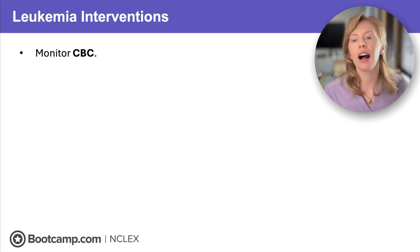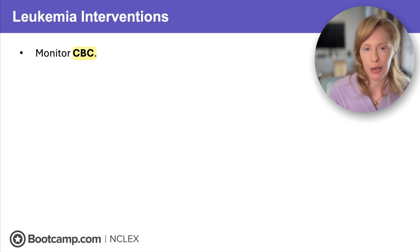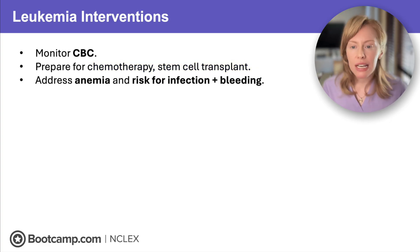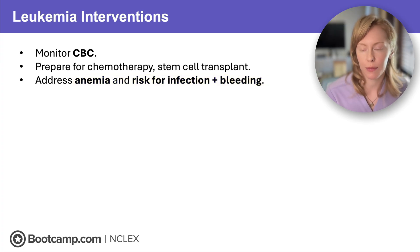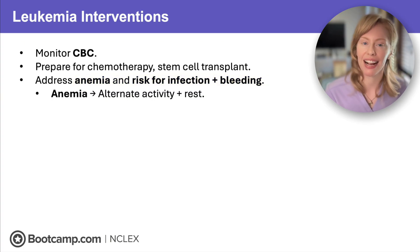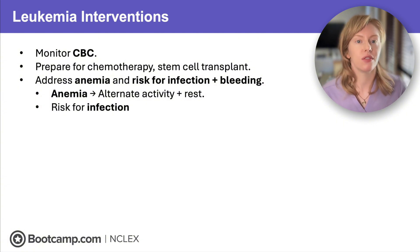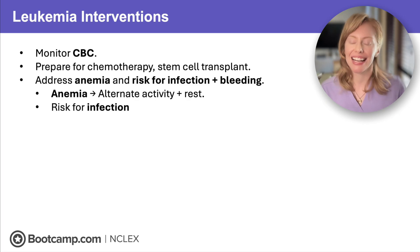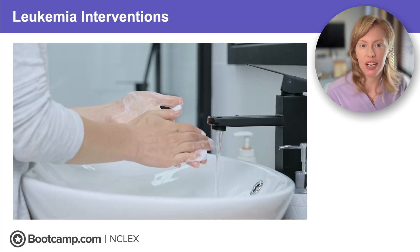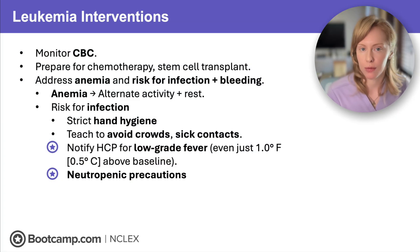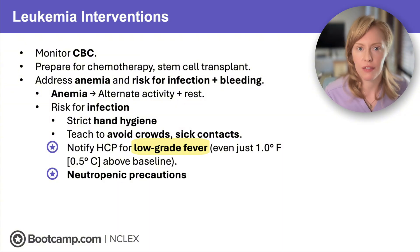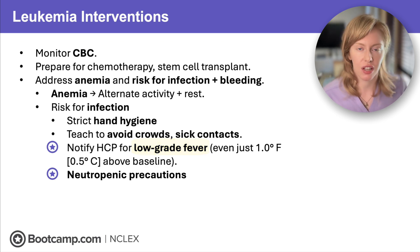Once diagnosed, monitor their CBC to trend the severity of pancytopenia and assess risk for infection, bleeding, and anemia while preparing them for chemotherapy and/or a stem cell transplant. Address anemia by teaching them to alternate activity and rest. It's very important to limit infection risk because it's a major killer in clients with leukemia — the most important intervention is strict hand hygiene. Teach them to limit exposure by avoiding crowds and sick contacts. Notify the healthcare provider for even a low-grade fever — just one degree Fahrenheit or half a degree Celsius above baseline could indicate a life-threatening infection.